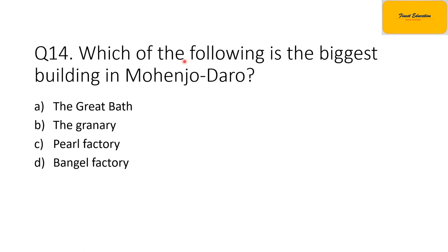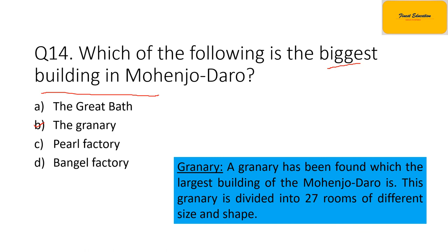The next question is: which of the following is the biggest building in Mohenjo-daro? Option A: the Great Bath; option B: the Granary; option C: Pearl Factory; option D: Bengal Factory. The correct option is option B. The Granary is the biggest building in Mohenjo-daro, comprising the largest building with 27 rooms divided into different shapes and sizes.